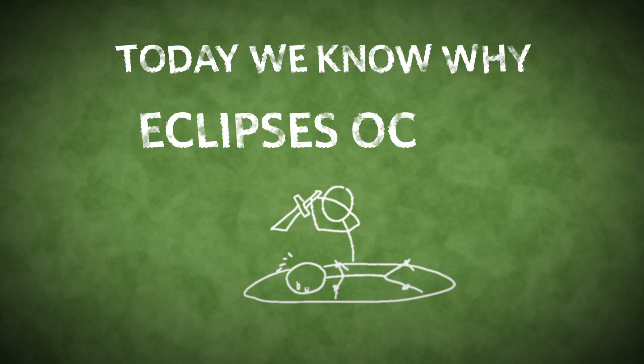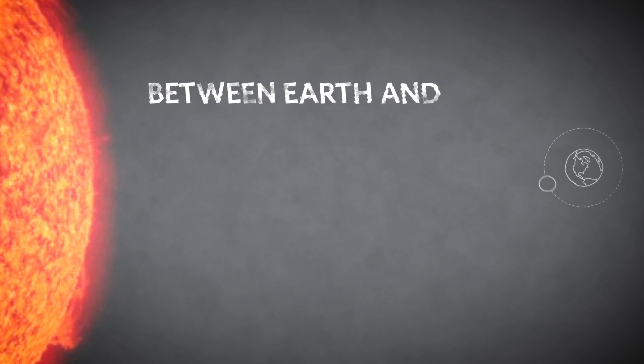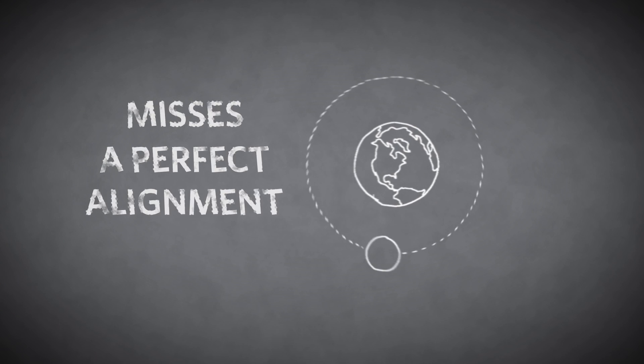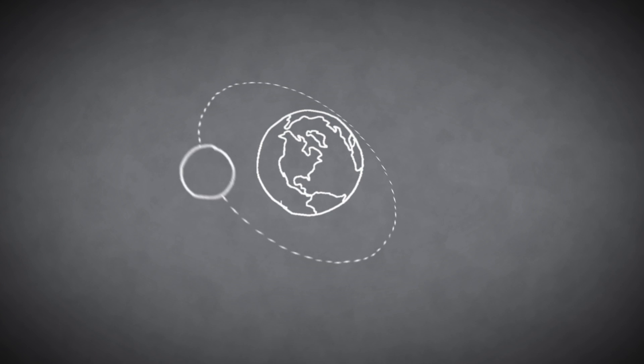Today we know why eclipses occur, and that sacrifices aren't necessary. It all has to do with the moon's orbit around Earth. As the moon circles our planet, it passes between Earth and the sun about once a month. But it usually misses a perfect alignment because the moon's orbit is slightly tilted with respect to the plane of Earth's orbit around the sun.